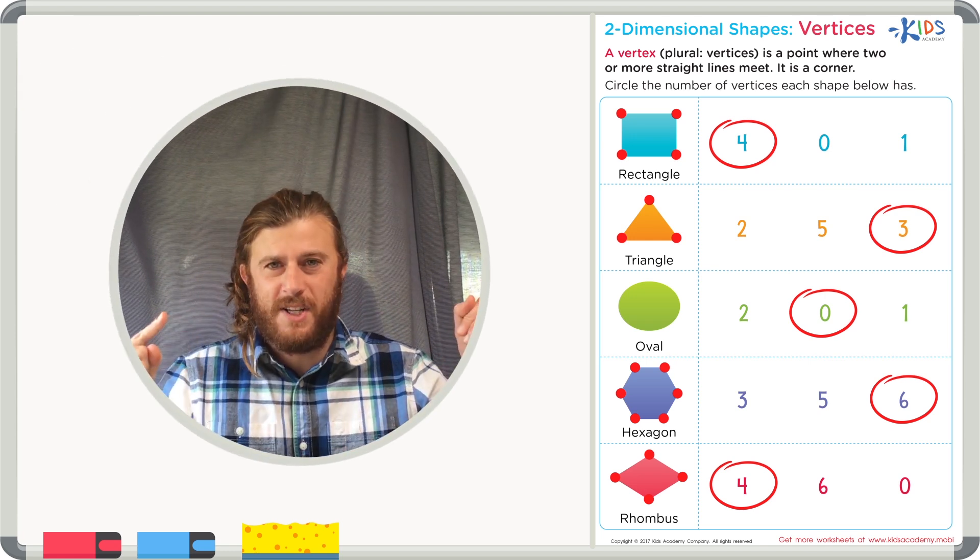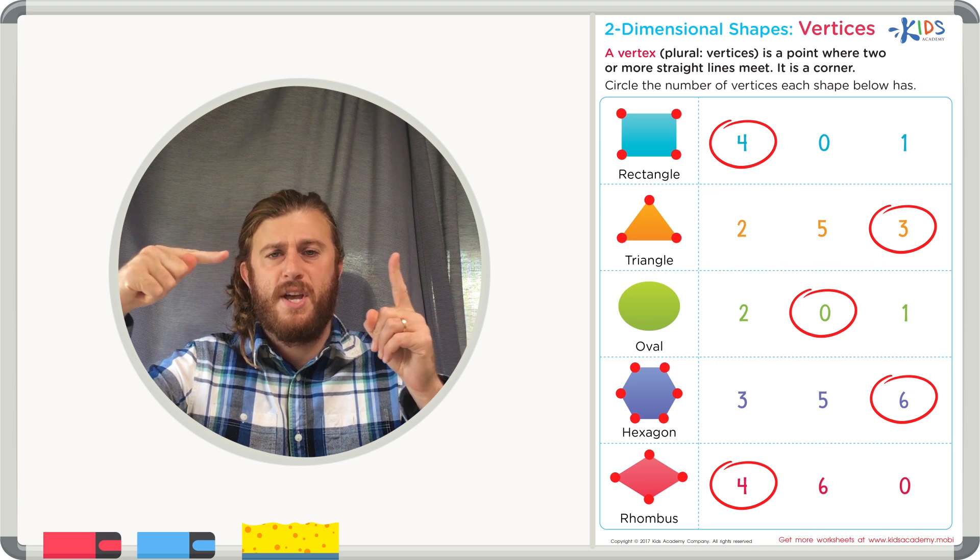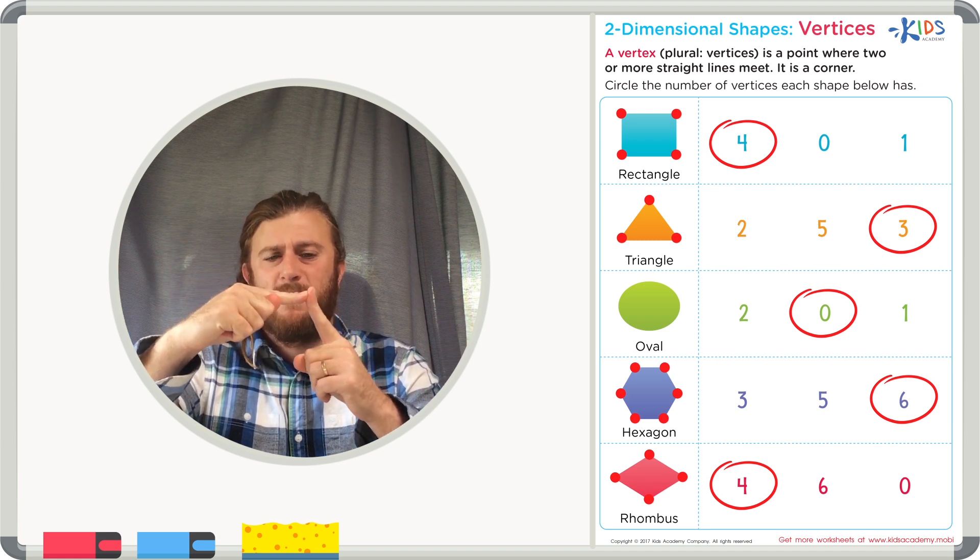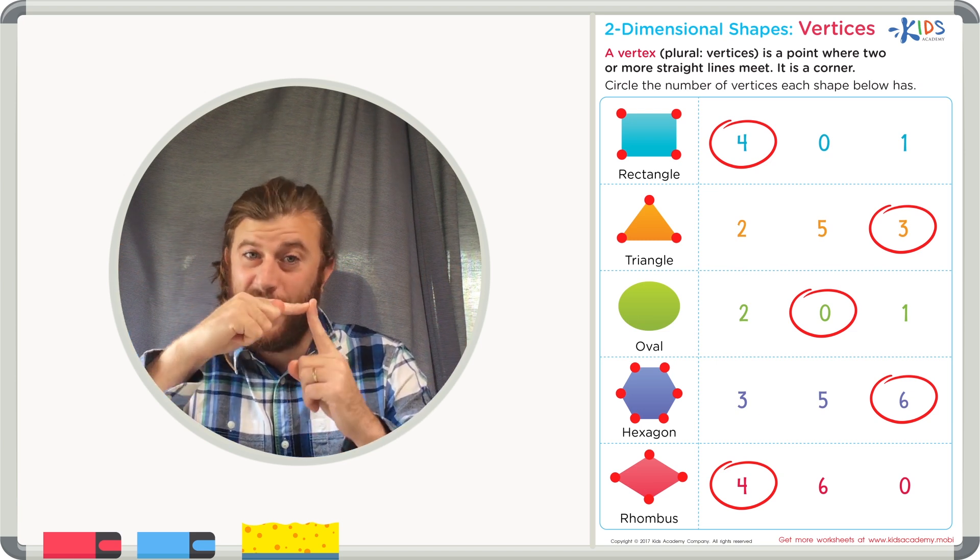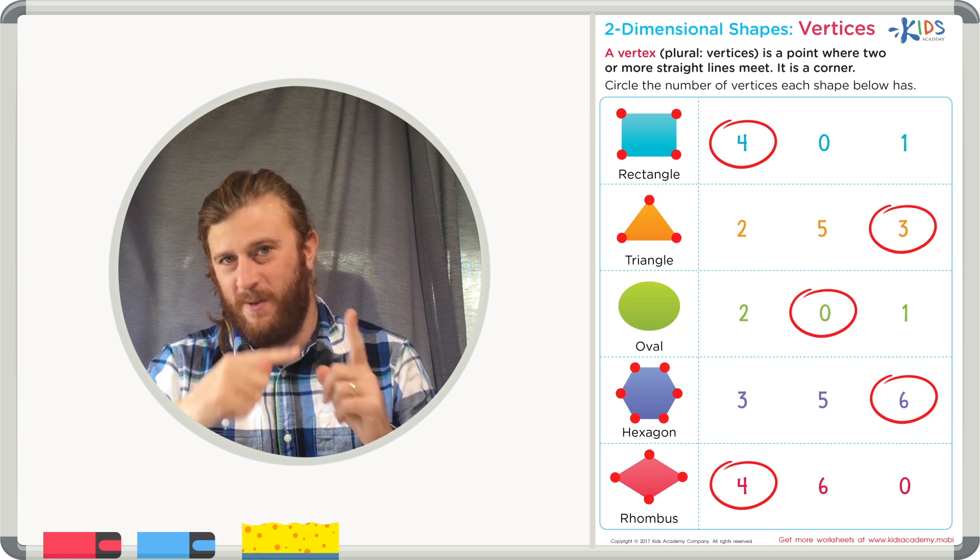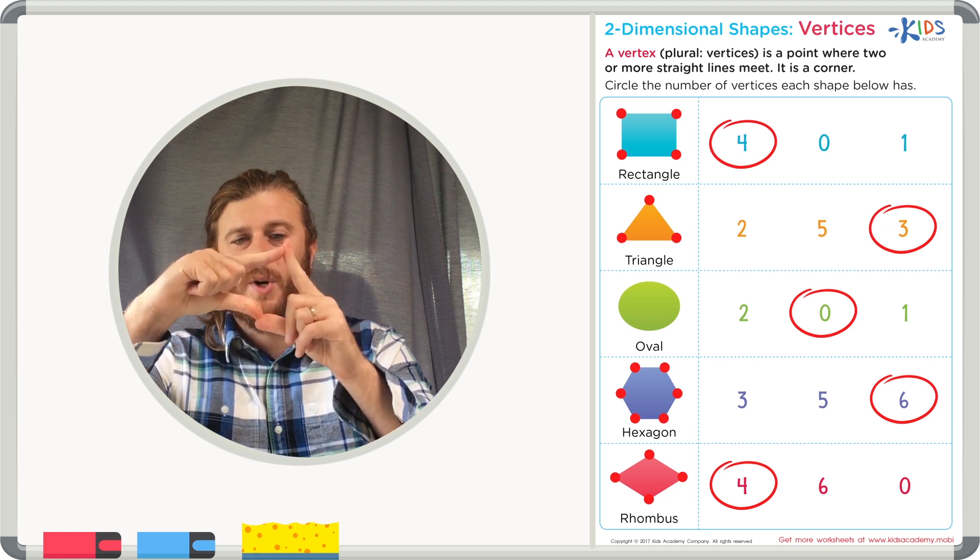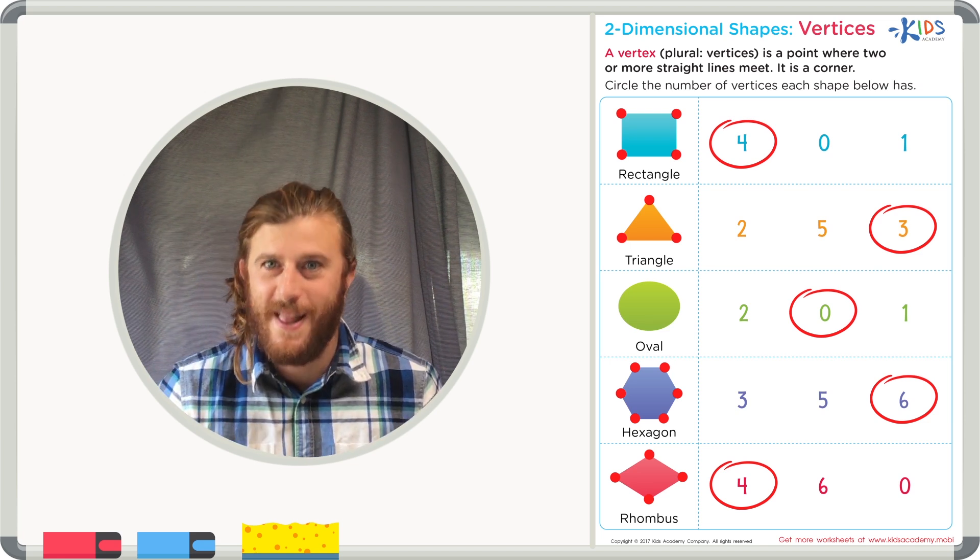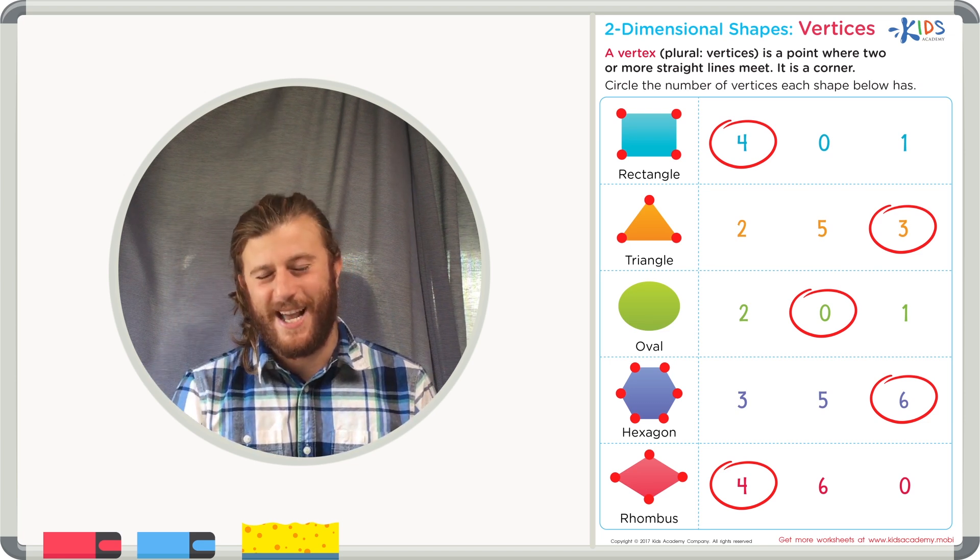Remember, boys and girls, a vertex or vertices is a point where two lines meet to form a corner. That corner is called a vertex. If you have more than one corner, it is called vertices. Thanks for watching, boys and girls. We'll see you next time.